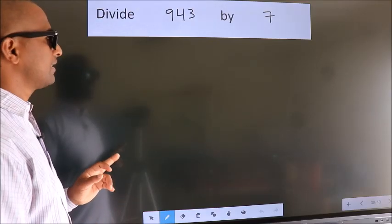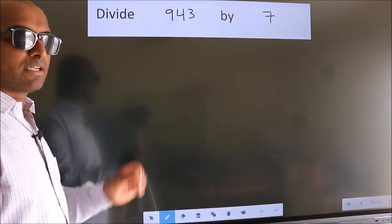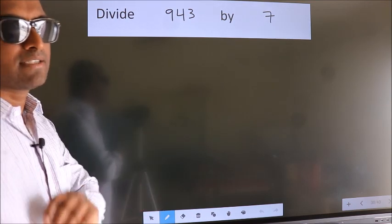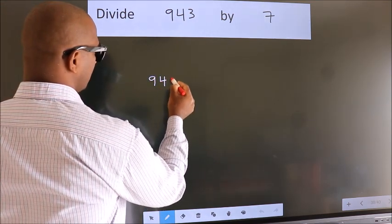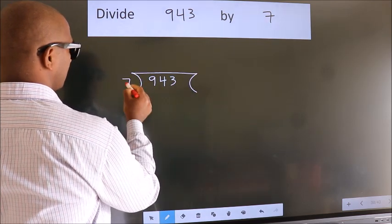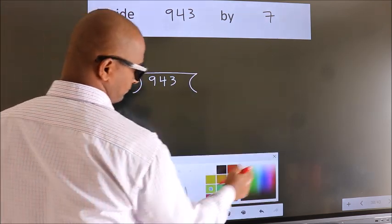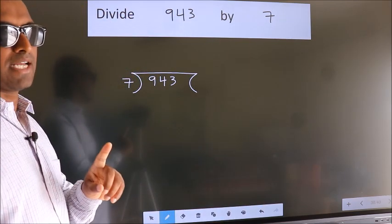Divide 943 by 7. To do this division, we should frame it in this way. 943 here, 7 here. This is your step 1.